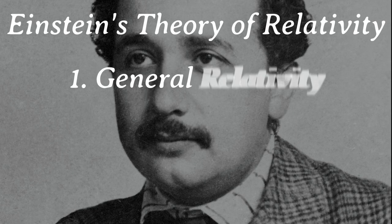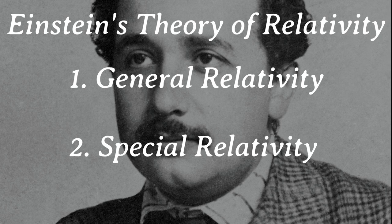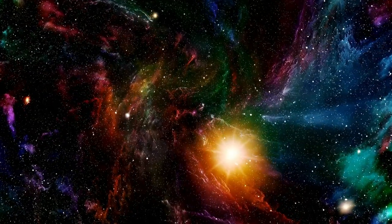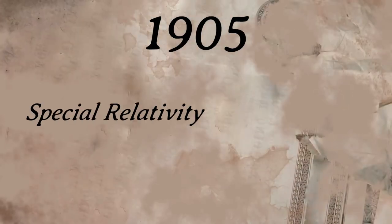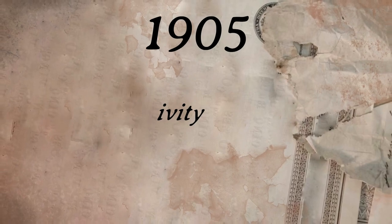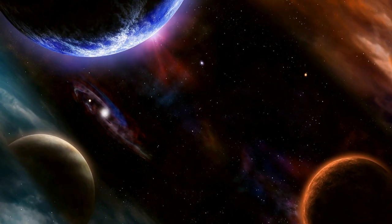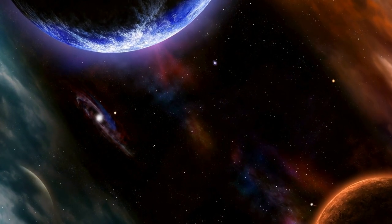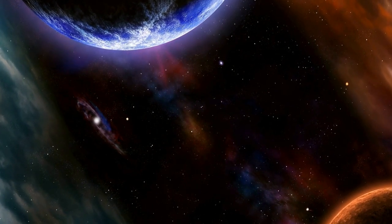General relativity and special relativity are two fundamental theories formulated by Albert Einstein that transformed our understanding of space, time, and gravity. Special relativity, developed in 1905, focuses on the relationship between space and time for observers moving at constant relative velocities. The key principles of special relativity include the following.